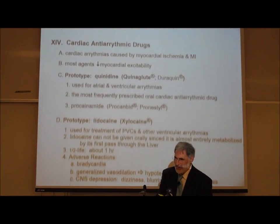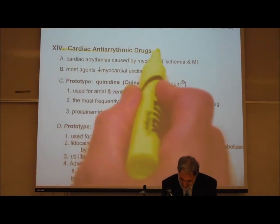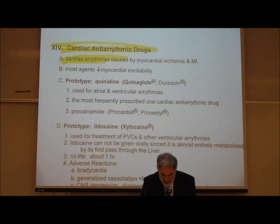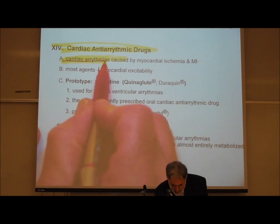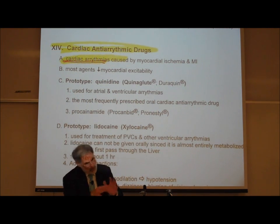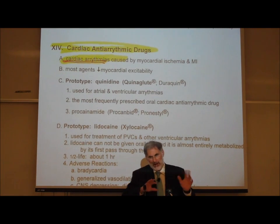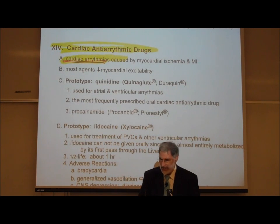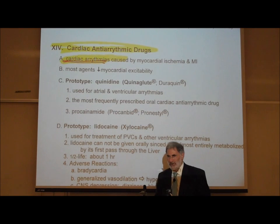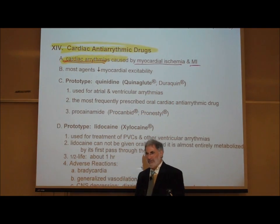Cardiac antiarrhythmic drugs. What is a cardiac arrhythmia? A cardiac arrhythmia is abnormal electrical patterns in the heart — abnormal electrical currents through the heart. If the electrical current through the heart is abnormal, the heart doesn't contract normally. Why does the person have abnormal electrical currents in their heart? Either because of myocardial ischemia or myocardial infarction.